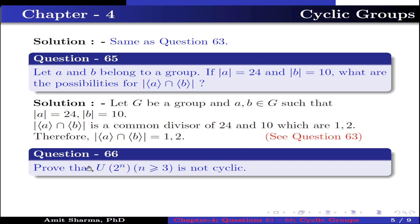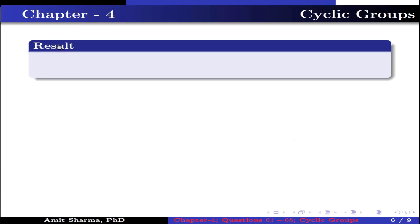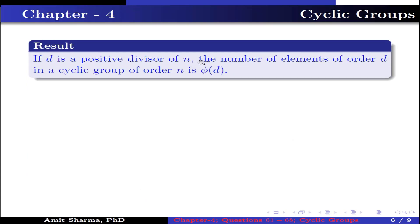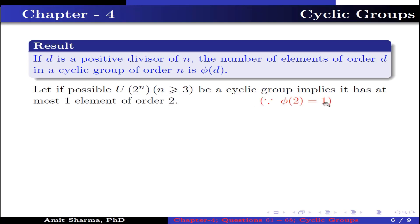Question number 66: Prove that U(2^n), where n ≥ 3, is not cyclic. The key result is: if d is a positive divisor of n, the number of elements of order d in a cyclic group of order n is φ(d). Suppose U(2^n) for n ≥ 3 is cyclic. This implies it has at most one element of order 2, because φ(2) = 1. But the elements 2^(n-1) + 1 and 2^(n-1) − 1 both have order 2.